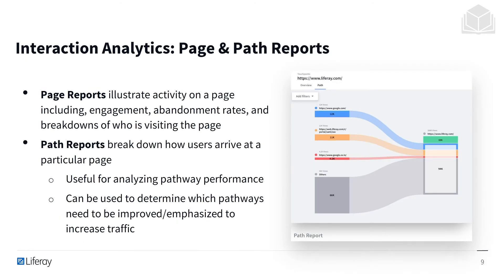Next we have page and path reports. Page reports illustrate activity on a page including the engagement, abandonment rates, and breakdowns of who is visiting the page. The path reports break down how users are arriving at a particular page. It's useful for analyzing pathway performance and can be used to determine which pathways need to be improved or emphasized to increase specific traffic. So not only are we able to understand how users are interacting with pages, but we can see how they're getting to them in the first place.